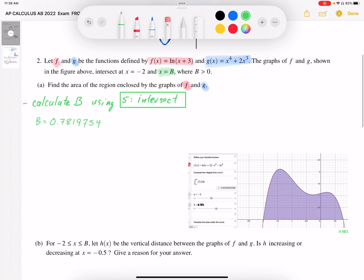I'm going to calculate the area in one go. The area is going to be equal to the integral from our lower bound, which is negative 2, that was given to us, to our upper bound, which is 0.782. And we're going to take the upper function, ln(x+3).